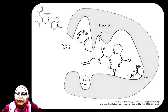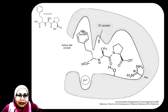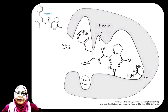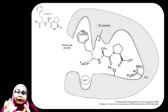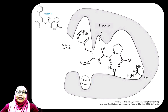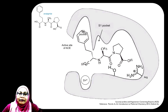In captopril, the proline will actually interact with the arginine, and there's an interaction between the carbonyl and the OH group. The CH3 remains interacting with the S1 pocket. The new extension group then interacts with the S2 pocket, which is mostly hydrophobic in nature. In enalaprilat, the thio group has been replaced back with carboxylic acid, which retains the ionic interaction with zinc that is expected.